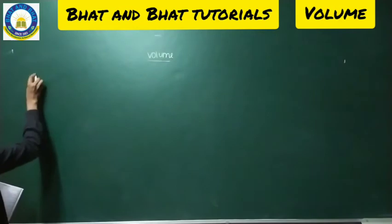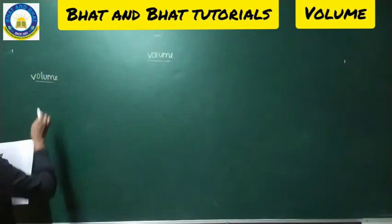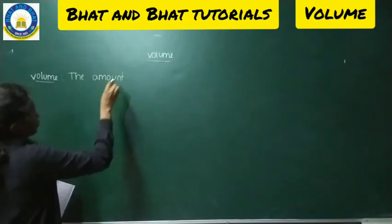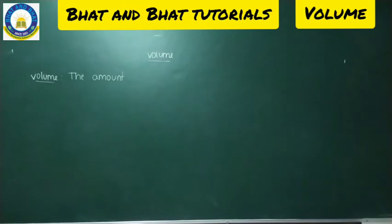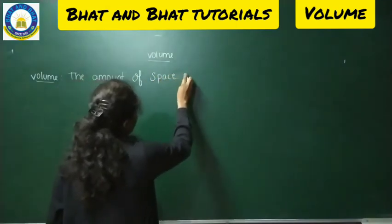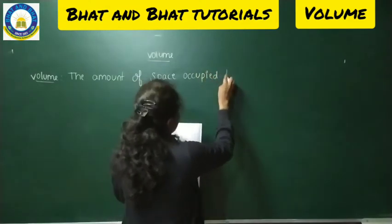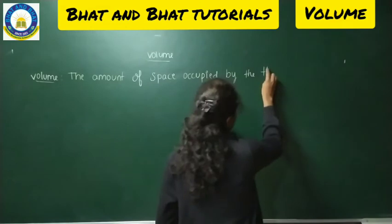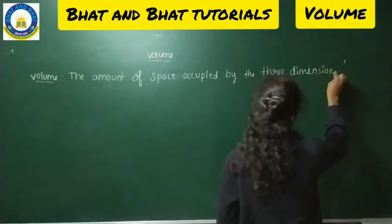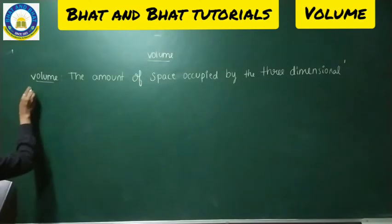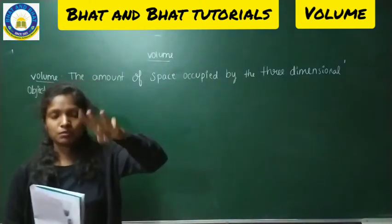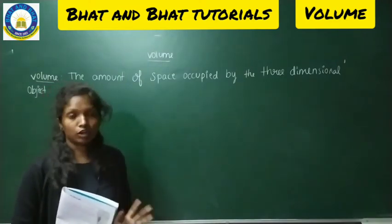Under volume, let's know the meaning of volume first. Volume is nothing but the amount of space occupied by a three-dimensional object. So the amount of space occupied by a three-dimensional figure — that means the figure can have three dimensions or more — we call it as volume.